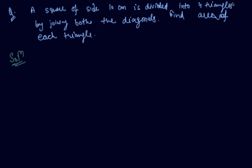So, student here is a question. A square of side 10 cm is divided into four triangles. So, let me draw the picture first. This is a square of side 10 cm and it is saying the square is divided into four triangles by joining both the diagonals.